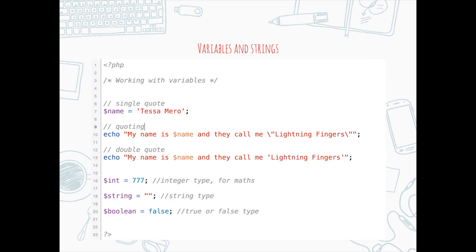Variables and strings: you can use single or double quote strings. To put quoted words within quotes, you either use the other single or double quote, or you can use the double quote by putting a backslash in front of it. An integer or decimal number does not have quotes around it — do this if you plan to use this number for math. A string uses quotes, and a boolean uses true or false without quotes.